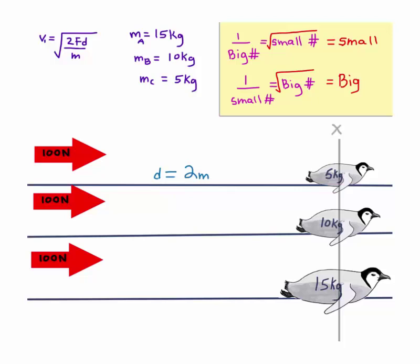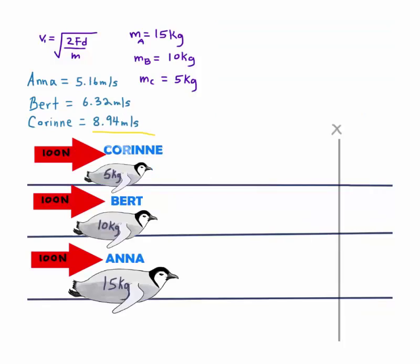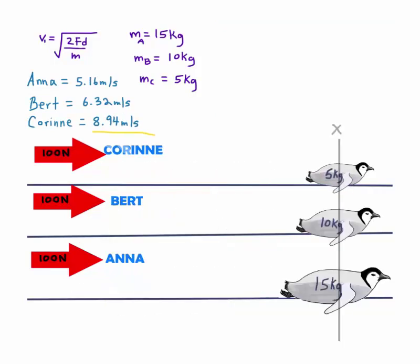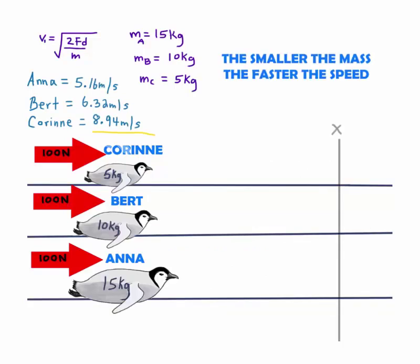And we also have 100 N for the force. So this number stays the same. Go ahead and plug all numbers in the variables and you should get this. Corrine has the highest speed. So when she is pushed, she slides the fastest. The smaller the mass, the faster the speed.